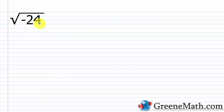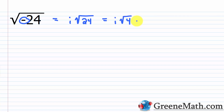What about the square root of negative 24? The first thing is to pull out the negative, recognizing that as the square root of negative 1, which is i, times the square root of 24. Now 24 is not a perfect square, but one of its factors is: 24 equals 4 times 6, and 4 is a perfect square. So we have i times the square root of 4 times the square root of 6. The square root of 4 is 2, so this simplifies to 2i times the square root of 6.